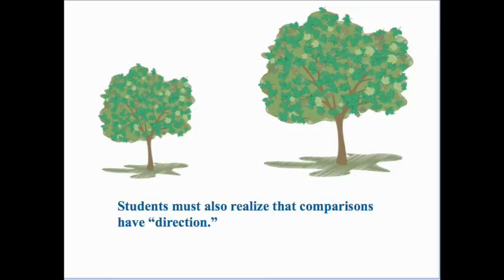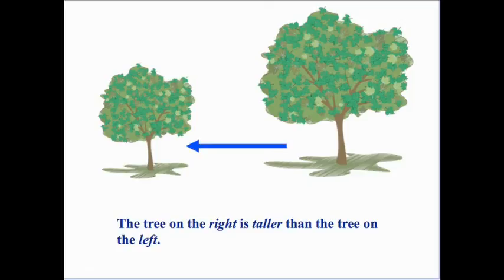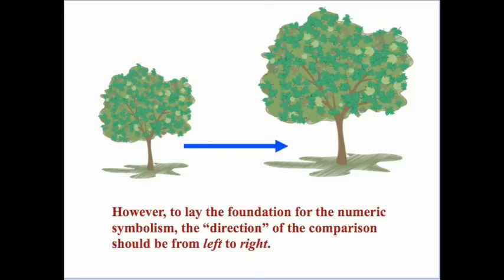Students need to realize that comparisons have direction. For example, the tree on the left is shorter than the tree on the right — we're going from left to right. But we could also do the comparison in the opposite direction and say the tree on the right is taller than the tree on the left. However, to lay the foundation for numeric symbolism using greater than or less than symbols, the direction of comparison should be from left to right so that the symbols will match.